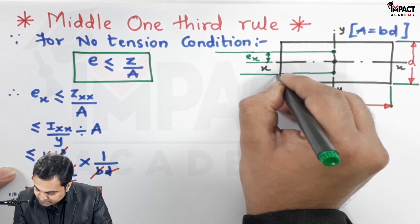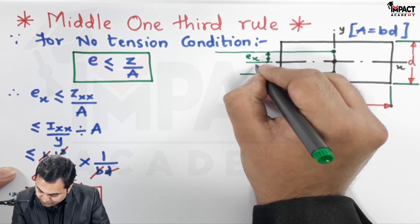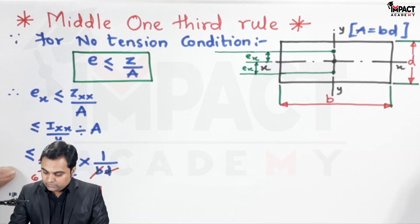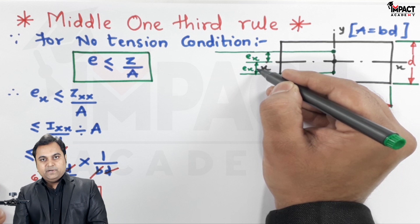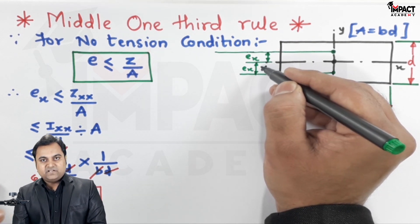Similarly, from the x-axis onto the other side, measuring the distance from the x-axis because eccentricity is with respect to x. Now here we get e_x as d/6, this e_x is d/6. Addition of them becomes d/3.